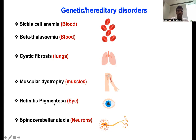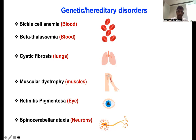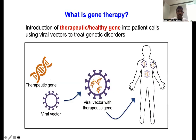Another disease is cystic fibrosis, which affects the lung. It is also a monogenic disorder caused by a mutation in the CFTR gene. There is also the most common muscle disorder, muscular dystrophy — Duchenne muscular dystrophy — which causes muscle weakness due to mutation in the DMD gene. The most common ophthalmological disease is retinitis pigmentosa, which affects the eye. And the disease called spinocerebellar ataxia, which is a neurological disorder. These are the common genetic or hereditary disorders affecting the human population across the world.